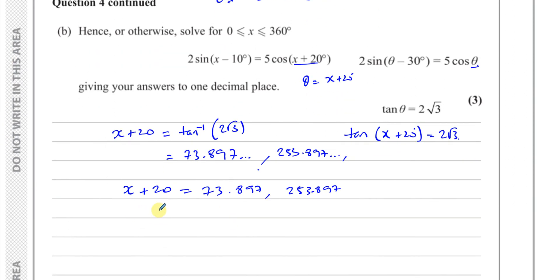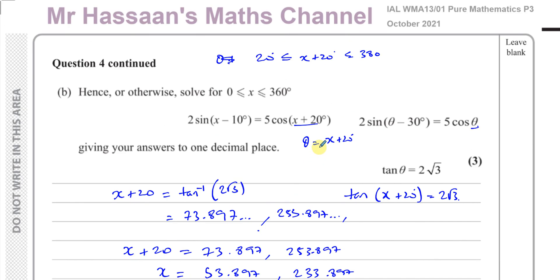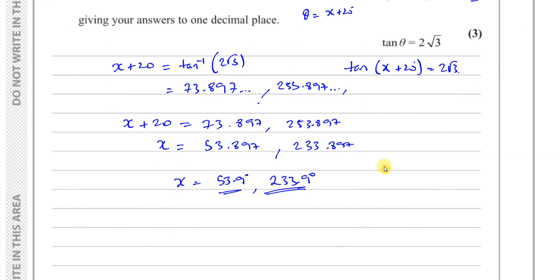So I know that x + 20 is equal to these two angles: 73.897 and 253.897. Therefore x, to find x, I've got to subtract 20 from these. This is going to be 53.897 and this is going to be 233.897. So x is going to be 53.9 to one decimal place and 233.9 to one decimal place as required in the question. And there we have answered part B and we've completed this question.